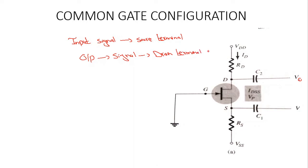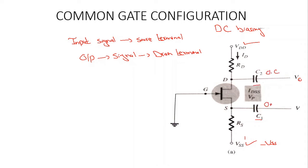We have two DC sources: one is VDD and the other is VSS. VDD is at higher potential with respect to ground, while VSS is at lower potential with respect to ground, so this is actually minus VSS. Because we are doing DC analysis, the coupling capacitors C1 and C2 are going to be open-circuited, as their impedance is infinity at DC (zero frequency), so these two branches will be open-circuited.